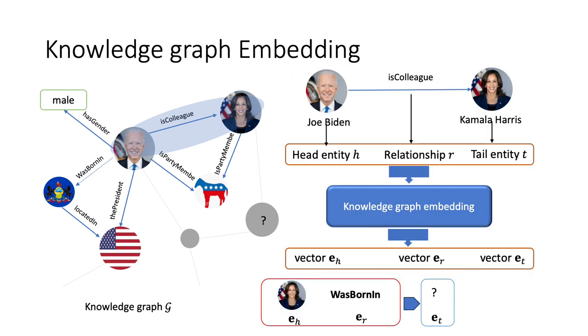We always seek knowledge graph embedding to solve this problem. In the embedding space, we have the head entity vector, the relationship vector, and the tail entity vector. These vectors formulate the mathematical problem to infer the correct tail entity vector given the head and relationship vector.